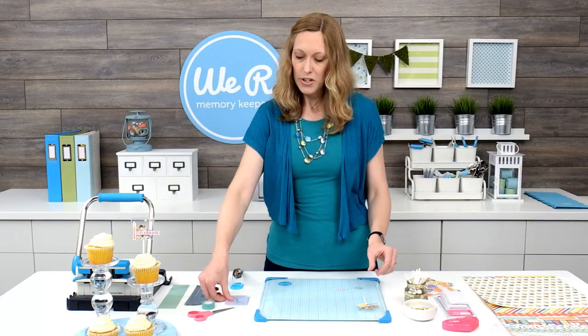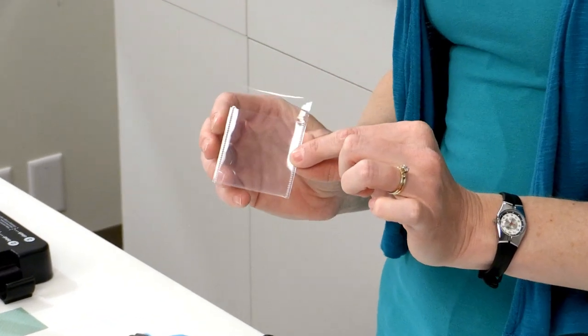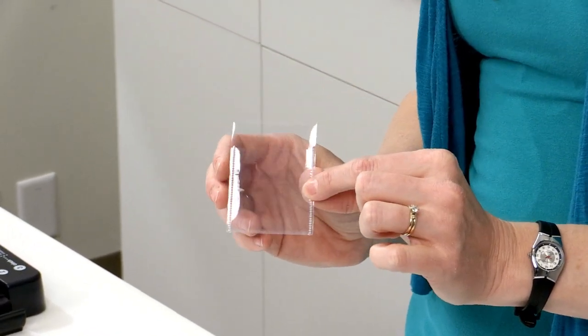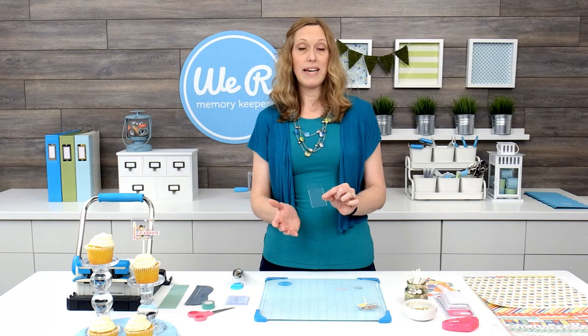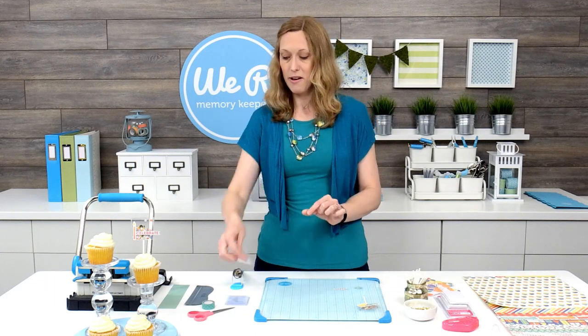First of all, you're going to take one of the 2x2 waterfall sleeves, and we're going to fill this with some confetti. Now, you can go out to the store if you'd like and buy some confetti. There's a lot of fun products out there, or you can make it yourself.